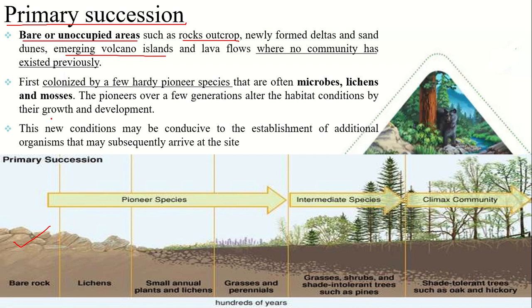First, weathering and natural forces break down the substrate rock enough for the establishment of a few plants and lichens, which demand very little soil. These are known as the pioneer species — the first to occupy a new piece of land. Once a new piece of land is formed and soil just begins to form, these pioneer species get established. Over hundreds of years, they further break down the rock and add organic matter, providing for the formation of soil.